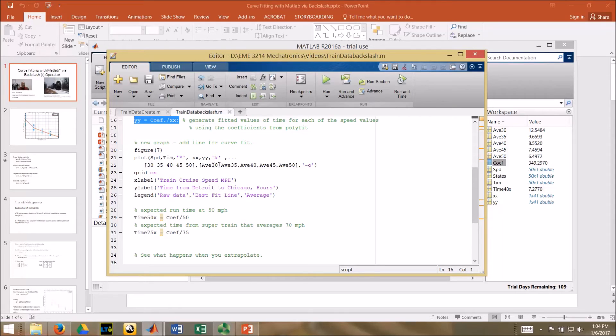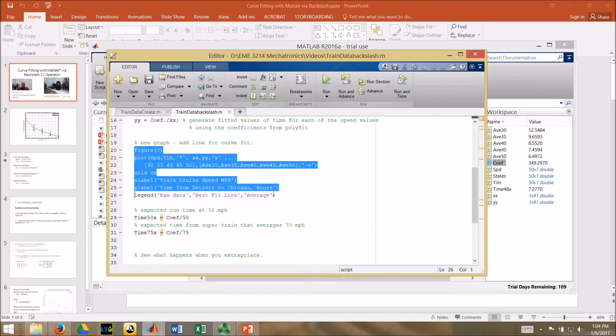I'm going to take that coefficient divided by that set of values to get my y values, set up a graph, I'll plot the original data, I'll plot my xx y y which are the expected values from my regression, and I'll plot the averages. This is essentially the same plot we did last time.